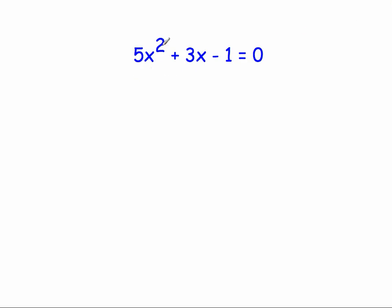We've been asked to solve 5x squared plus 3x minus 1 equals 0, and we're going to use completing the square. Because it's an equation that equals 0, we're allowed to divide through by 5. That gives us x squared plus 3 fifths x minus 1 fifth equals 0.